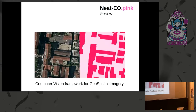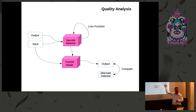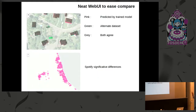Once you understand that, NetEO.pink is just a way to build a bridge between geospatial data and deep learning. There are three tasks we are focused on. The first is quality analysis: once you train your model and are able to compute an output, you will also be able to compare this output to an existing dataset and put in evidence whether there is a significant difference or not.